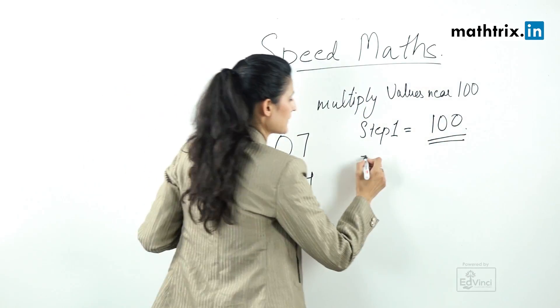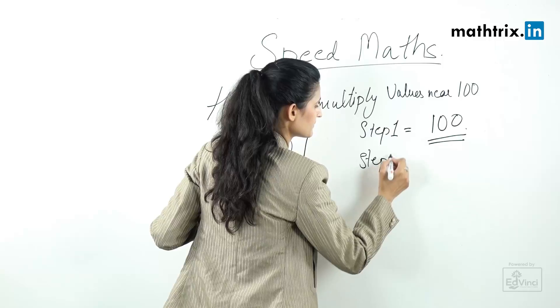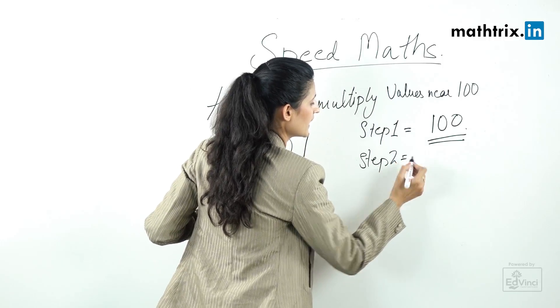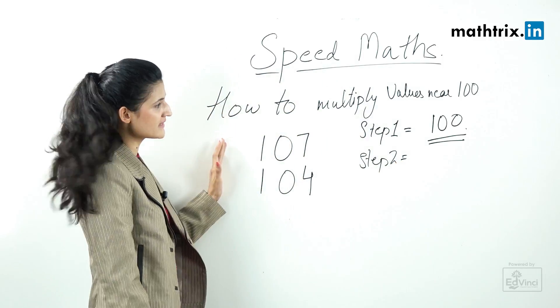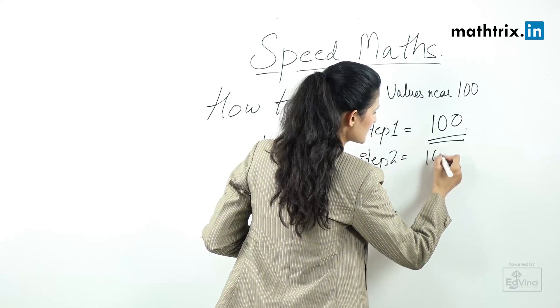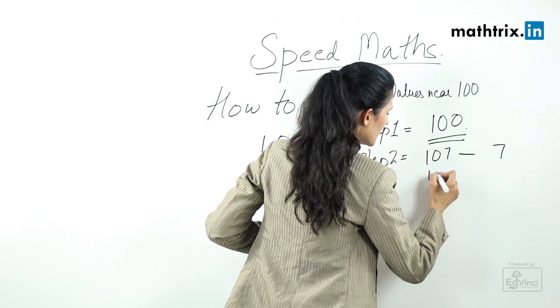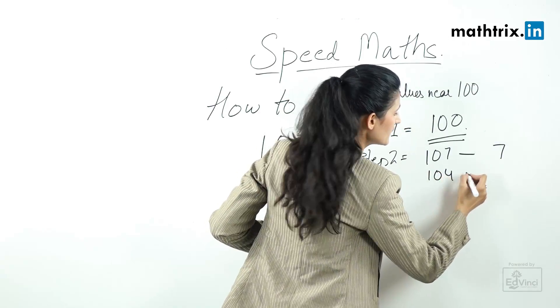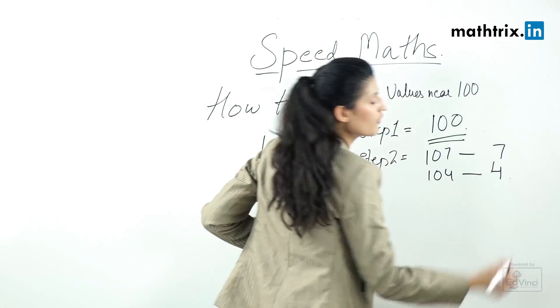Step number 2: we take the differences of these numbers from 100. If it is 107, the difference is 7. For 104, the difference is 4.